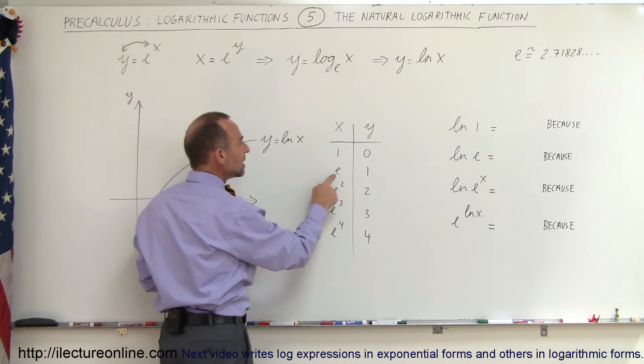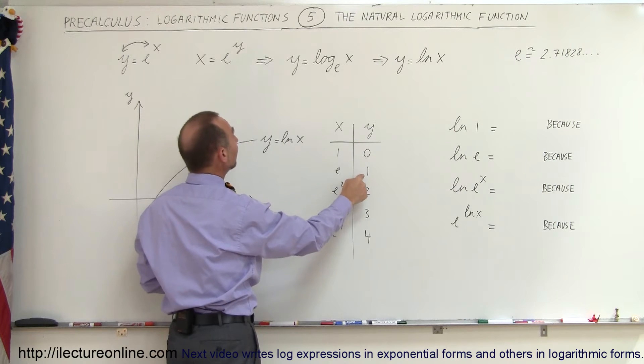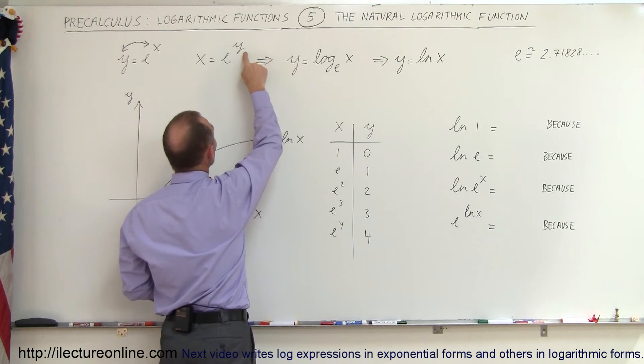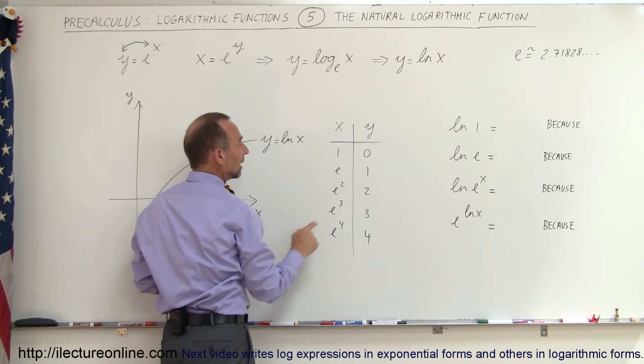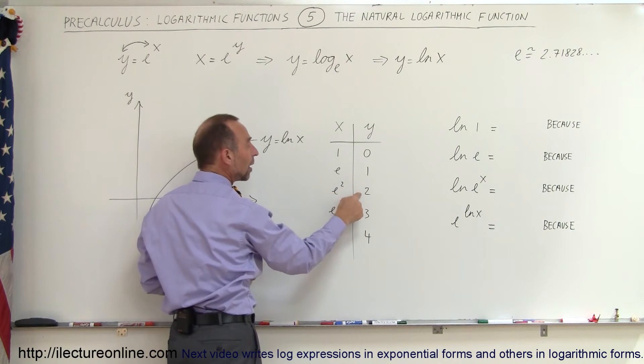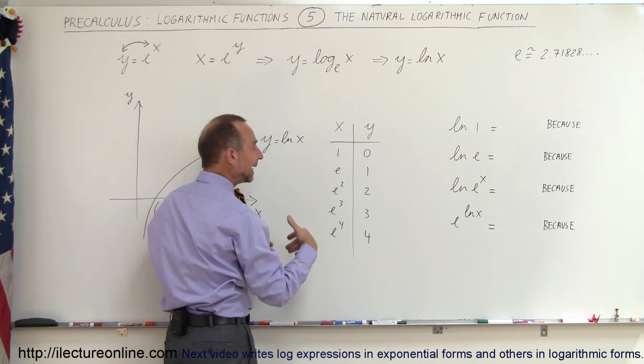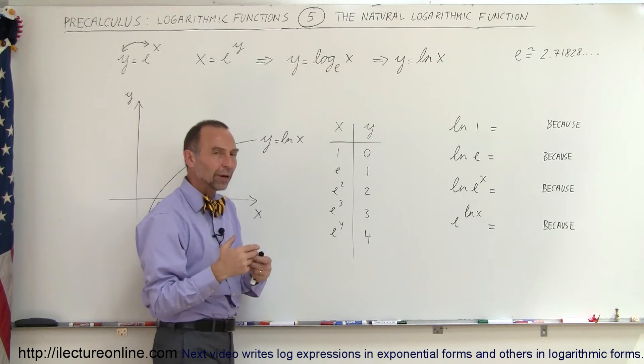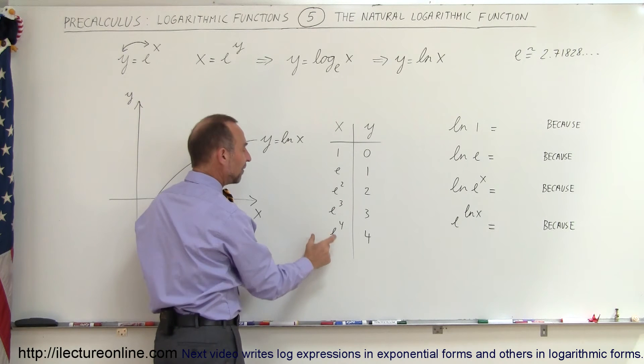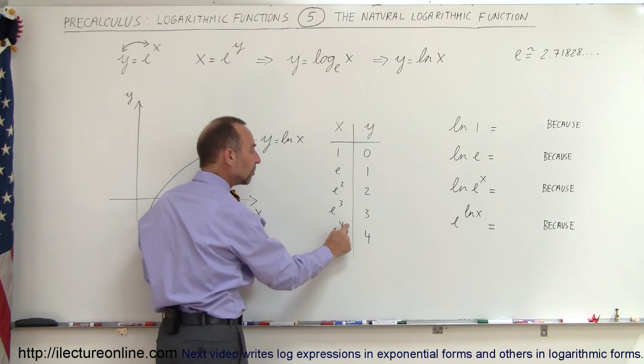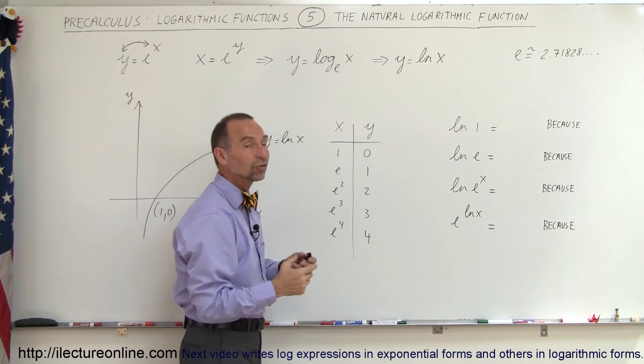If x is equal to e, y is equal to 1. Again, e to the first power is equal to e, so that comes out right here. If x is equal to e squared, then y is equal to 2. If x is equal to e cubed, then y is equal to 3. If x is equal to e to the fourth, then y is equal to 4. In any case for any logarithmic function, if x is equal to the base raised to some number, y will be equal to that exponent.